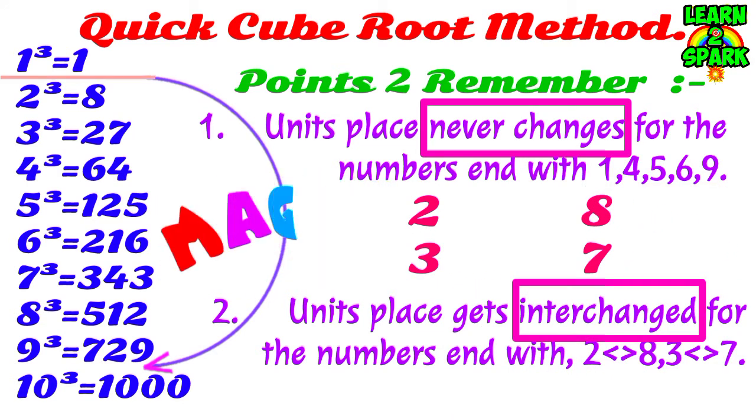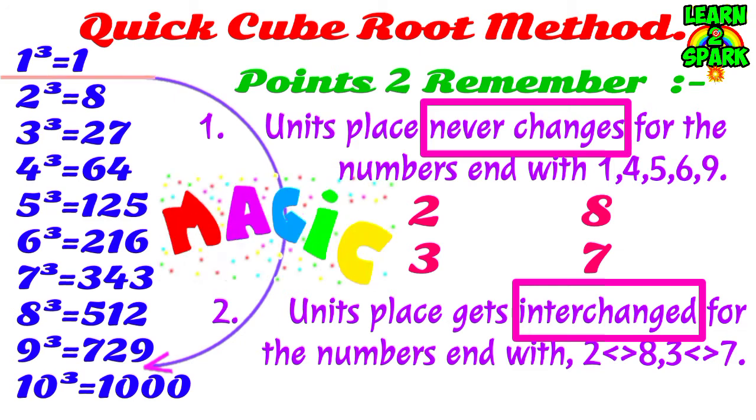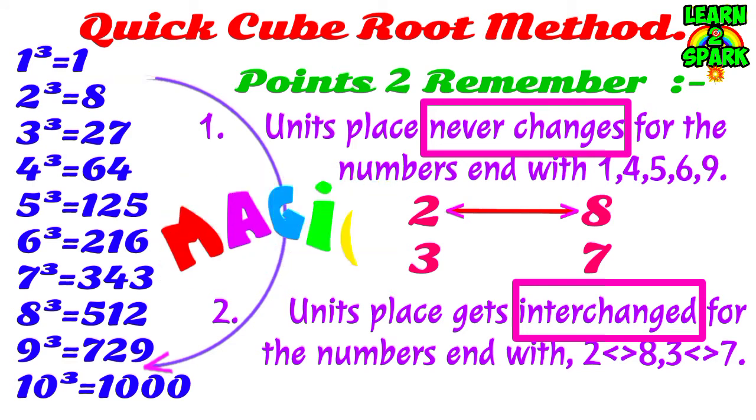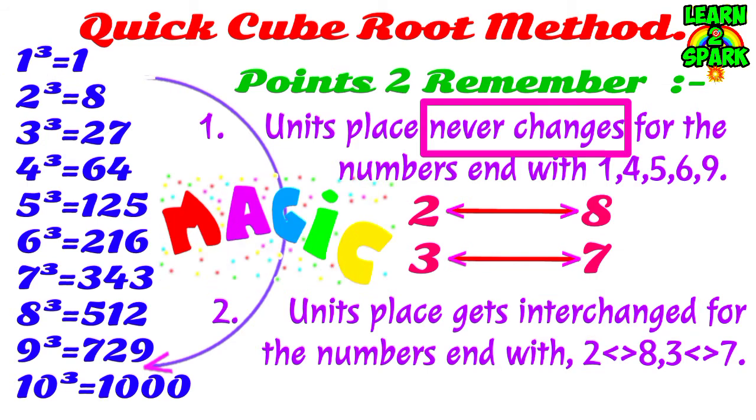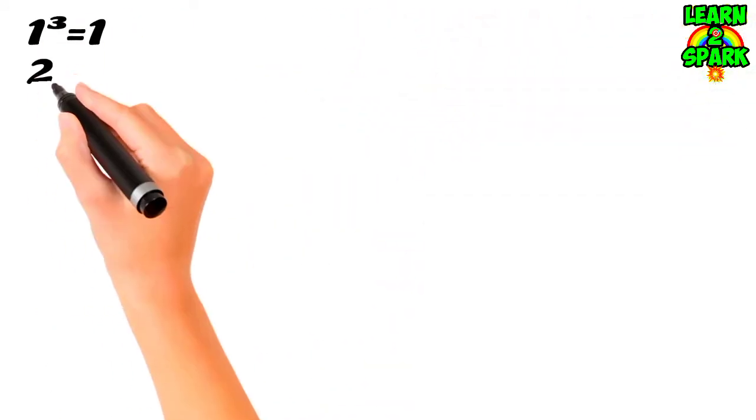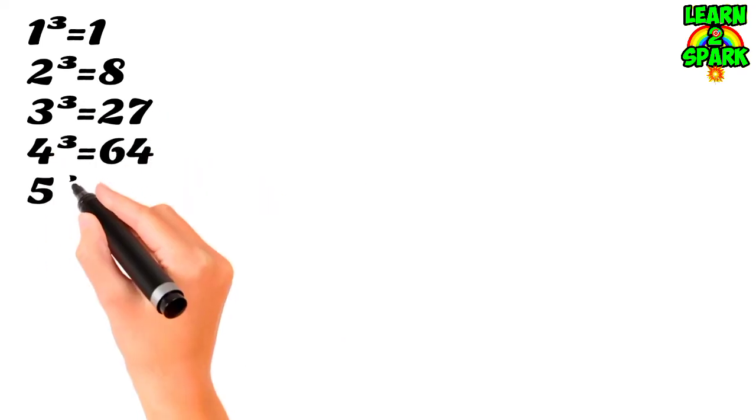Which means if the number has 2 in its units place, its cube root will have 8 in the units place and vice versa. It's applicable for 3 and 7 as well. Like if it's 3, it will be changed to 7, and 7 will be replaced with 3 as well.